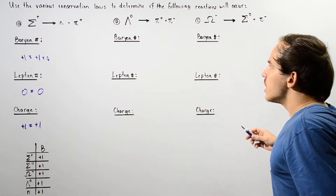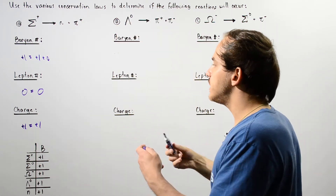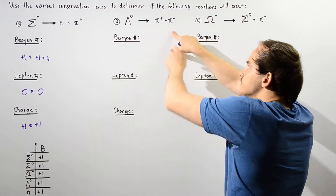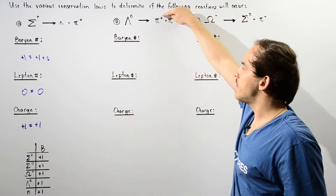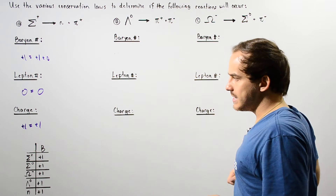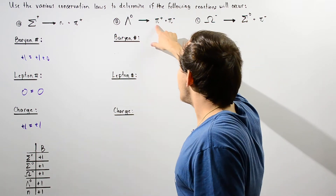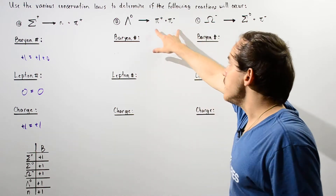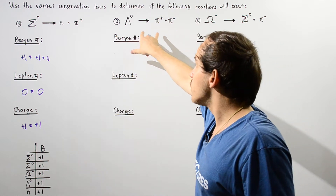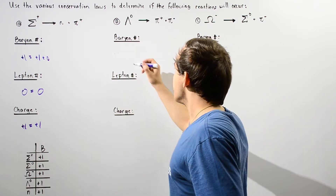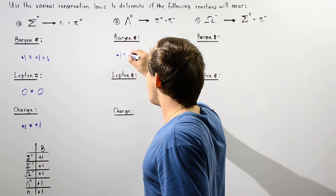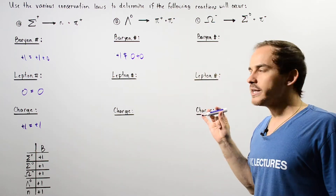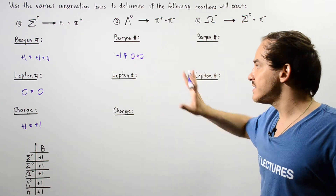What about part B? We now have a slightly different reaction: a lambda that decays into two pions — a pion positive and a pion negative. The pion positive and pion negative are not baryons, so they both get a baryon number of zero. However, the lambda gets a positive one. We see that positive one is not equal to zero plus zero, so the baryon number is not conserved and this reaction will not take place.